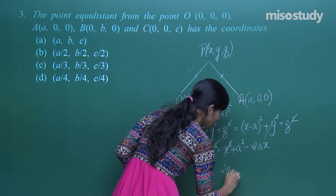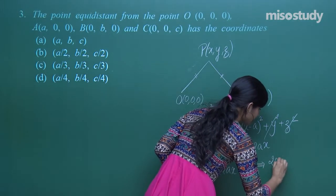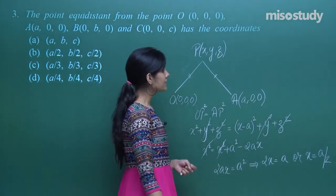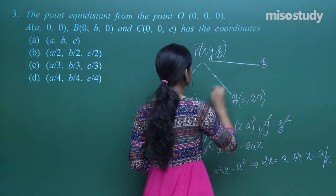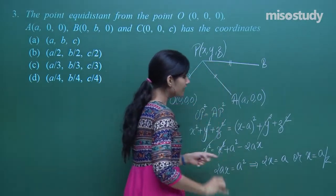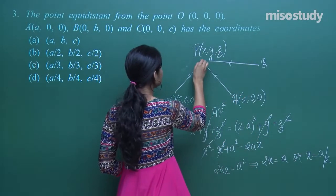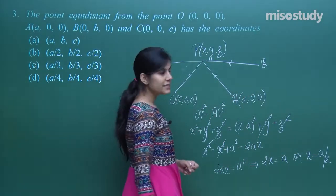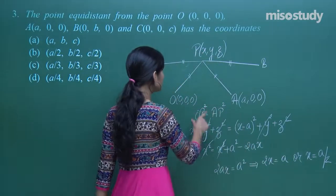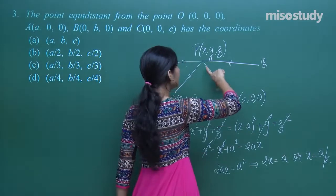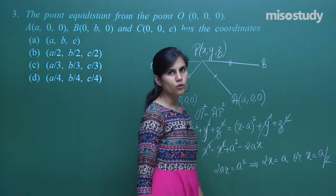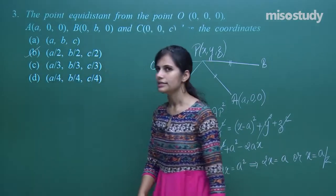Using OP equals BP gives y = b/2, and using OP equals CP gives z = c/2. So by combining these three relations — OP = AP gave x = a/2, OP = BP gave y = b/2, and OP = CP gave z = c/2 — the coordinates of the equidistant point are (a/2, b/2, c/2).